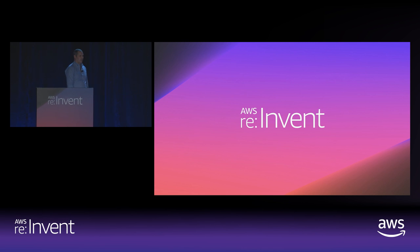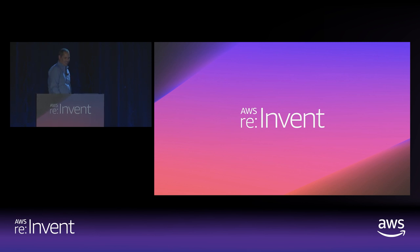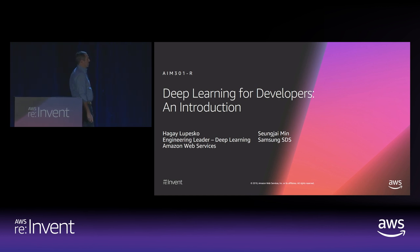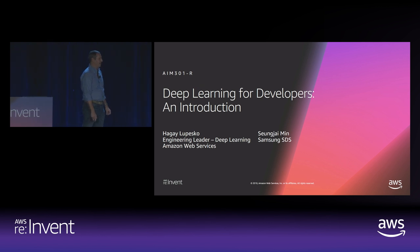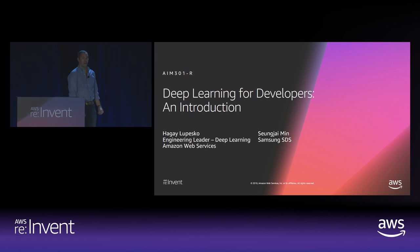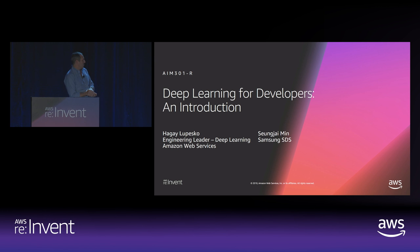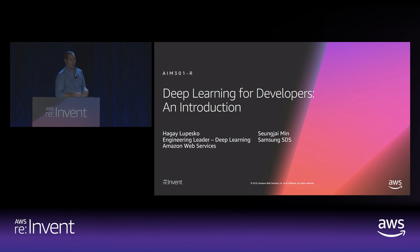We'll go ahead and get started. Thanks everyone for coming. I know this is a late session, especially since there's a pub crawl and other things going on, so I do appreciate you taking the time out. Today we're going to be talking about deep learning for developers. Just a quick note: I am actually not Hage Lupesco — he's a colleague of mine at AWS. My name is Nate Slater. This is a repeat session, so Hage was the original presenter and I'm presenting off his deck. We also have Sun Jae Min, who will be presenting the second part of the presentation from Samsung, talking about how they've used convolutional and recurrent neural networks to do some very interesting things with heart rate monitoring.